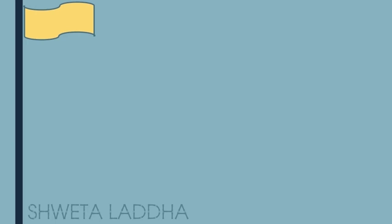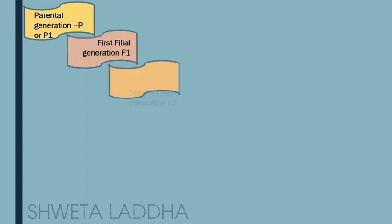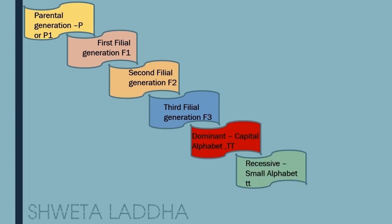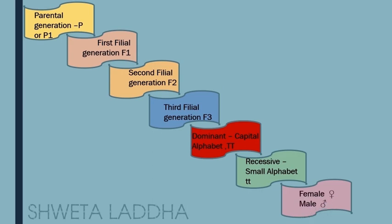Let us see the symbols used by Mendel. To show parental generation, he used capital P or P1. To show filial first generation, he used F1; second filial generation F2; third filial generation F3. Dominant characters were represented by capital alphabets — for example, tallness by capital T capital T. For recessive, he used small alphabets — dwarfness by small t small t. To represent a female, he used a circle with a cross below; to represent a male, a circle with an arrow above.